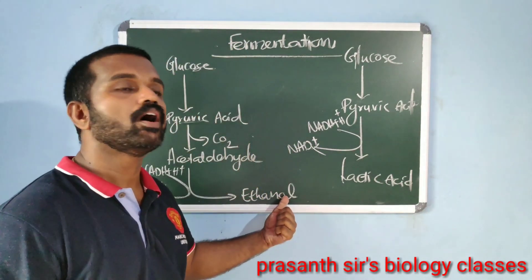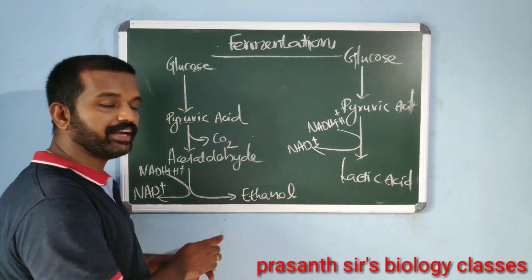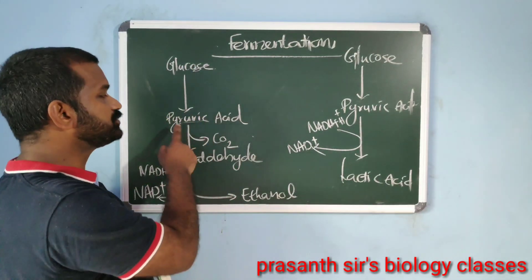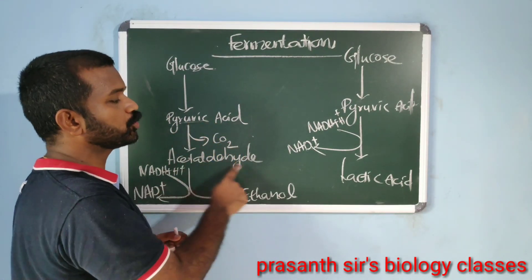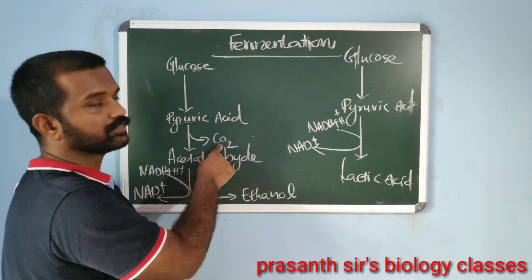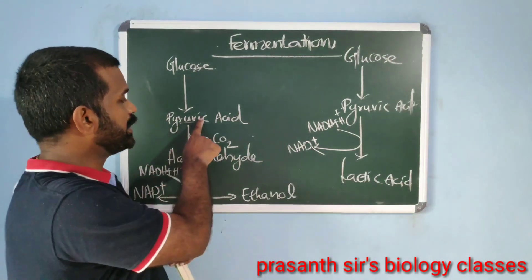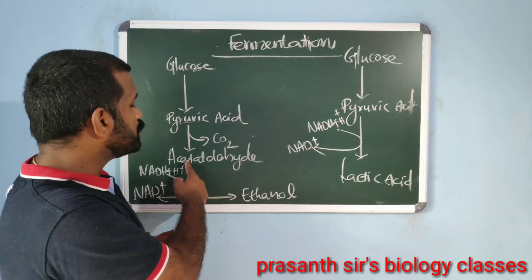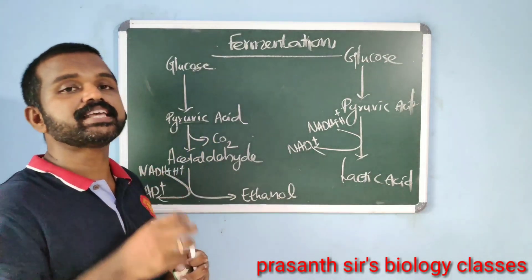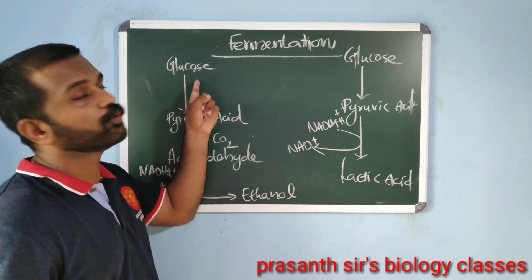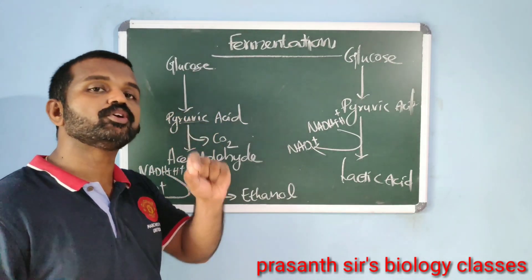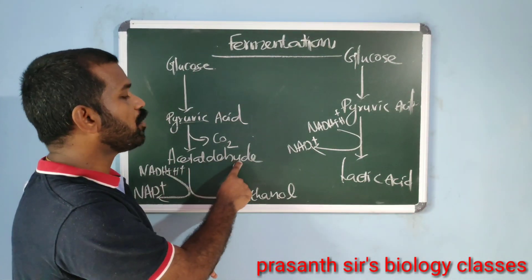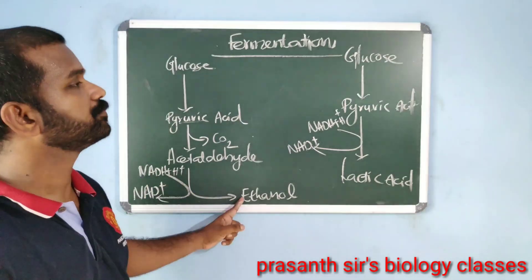In alcoholic fermentation, the first step is glycolysis where glucose is converted into pyruvic acid. After pyruvic acid formation, it is first converted into acetaldehyde — decarboxylation occurs, catalyzed by pyruvate decarboxylase. Next, acetaldehyde is reduced into ethanol; the reducing agent is NADH + H⁺ produced during glycolysis, which is converted back to NAD⁺. The enzyme involved in this step is alcohol dehydrogenase.